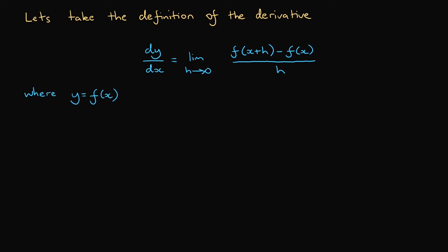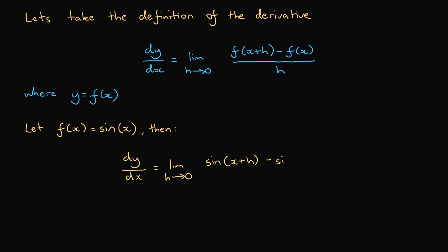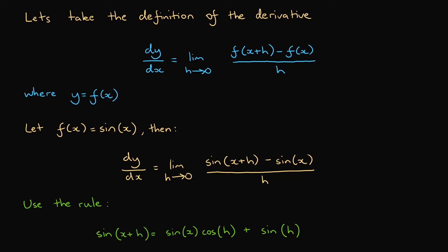Let's take f(x) equal to sine x. Then dy/dx equals the limit as h tends to 0 of [sine(x+h) minus sine x] all over h. Now let's use the trigonometric angle sum rule, which states that sine(x+h) equals sine x cos h plus sine h cos x.